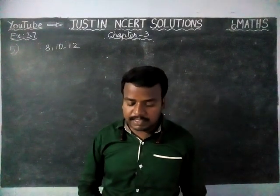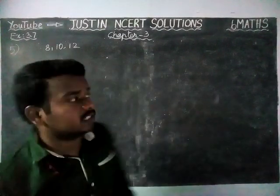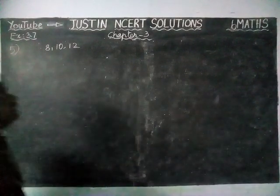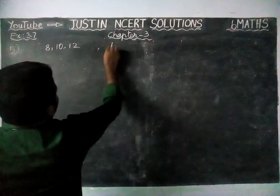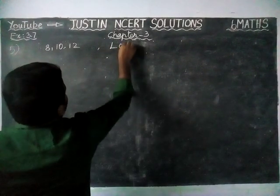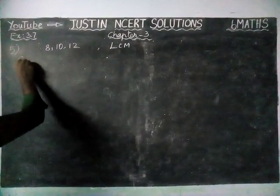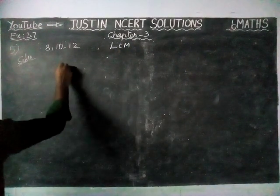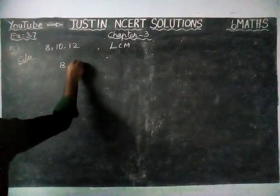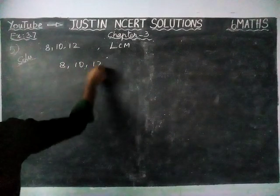We need to find the greatest 3-digit number which is exactly divisible. So, we have to find the LCM for the given values: 8, 10 and 12.